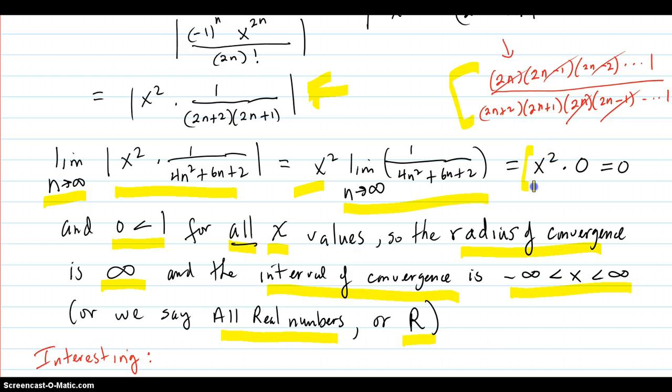So in other words, back to here, no matter what x you put in here, it's going to multiply by zero and get zero, and zero is less than one.